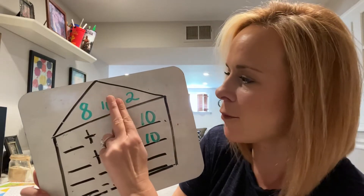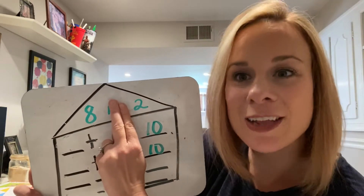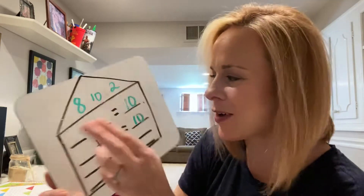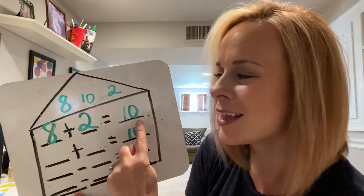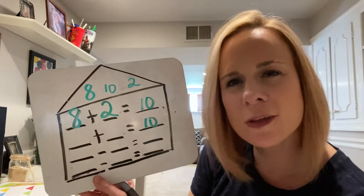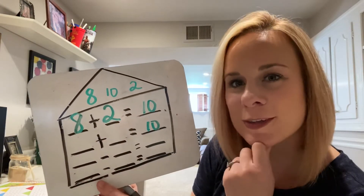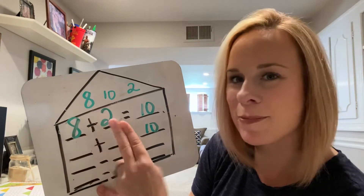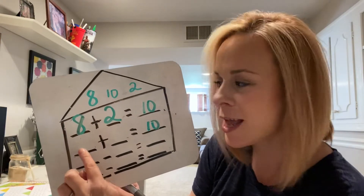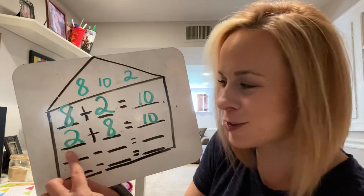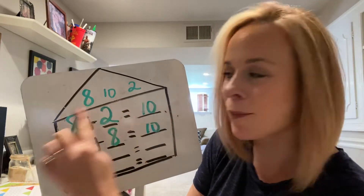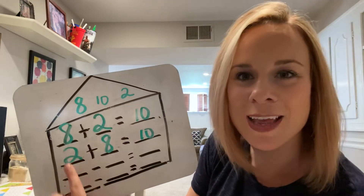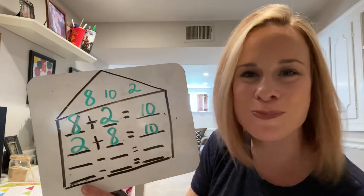We used 10, so we have two numbers left: eight and two. Let's plug those two numbers in — eight and two. Eight plus two does equal 10, so that's a true statement. Now, if we know eight plus two equals 10, what else do we know equals 10? These two numbers can flip-flop — they can switch. Let's put two first and then eight. Addends can always flip-flop or switch. Two plus eight equals 10. We're using only these three numbers, but in a related way to show we can make two true addition sentences.